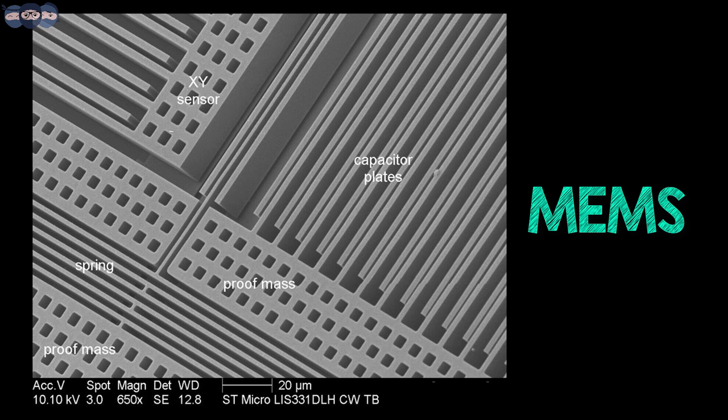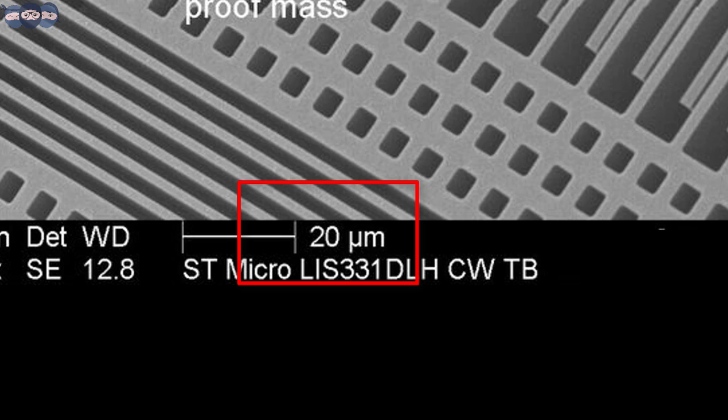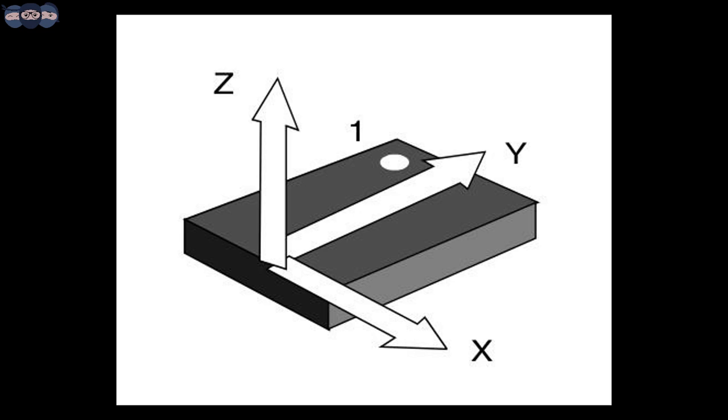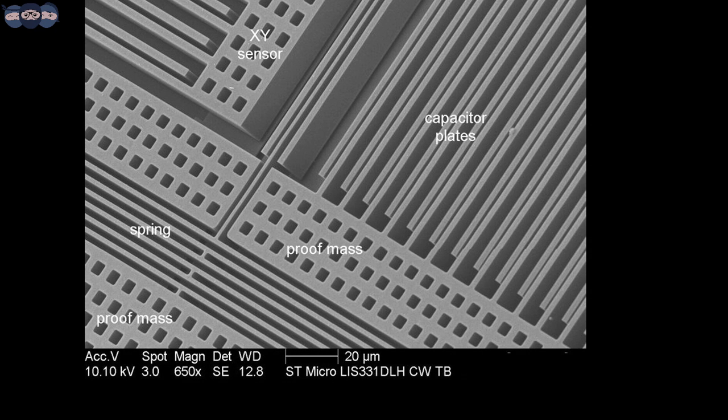MEMS stand for Micro-Electro-Mechanical Systems. These systems contain both mechanical and electronic components but they are fabricated at the scale of a micrometer. These MEMS are employed inside accelerometer IC which helps keep its size small.